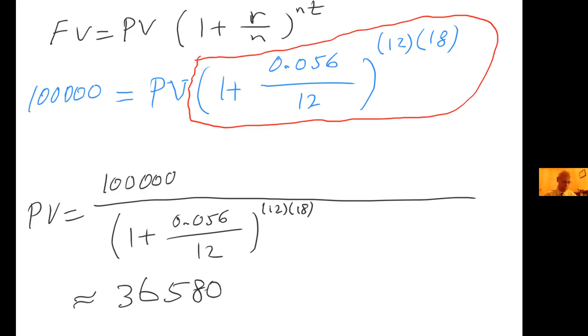Present value equals 100,000 divided by 1 plus 0.056 divided by 12 to the power of 12 times 18. My calculator gave me, to the nearest penny, $36,580.48. Not bad. Slightly more than a third of the money, if you put it now, 18 years from now we're going to have $100,000 at that particular account. Let's do one more.